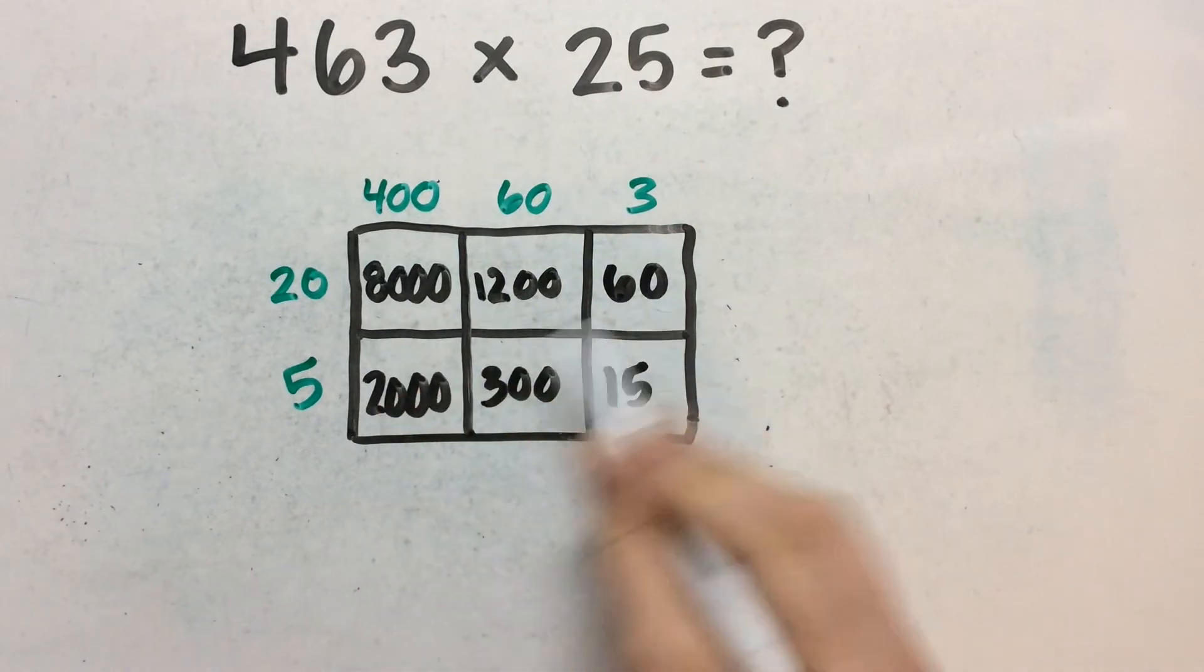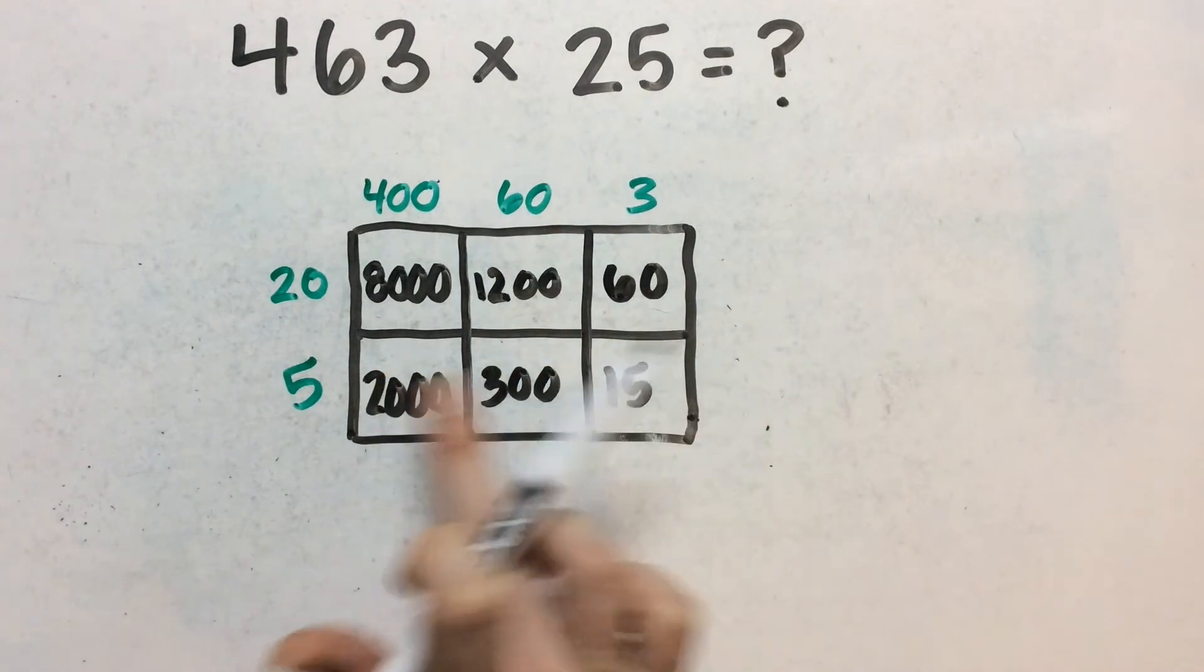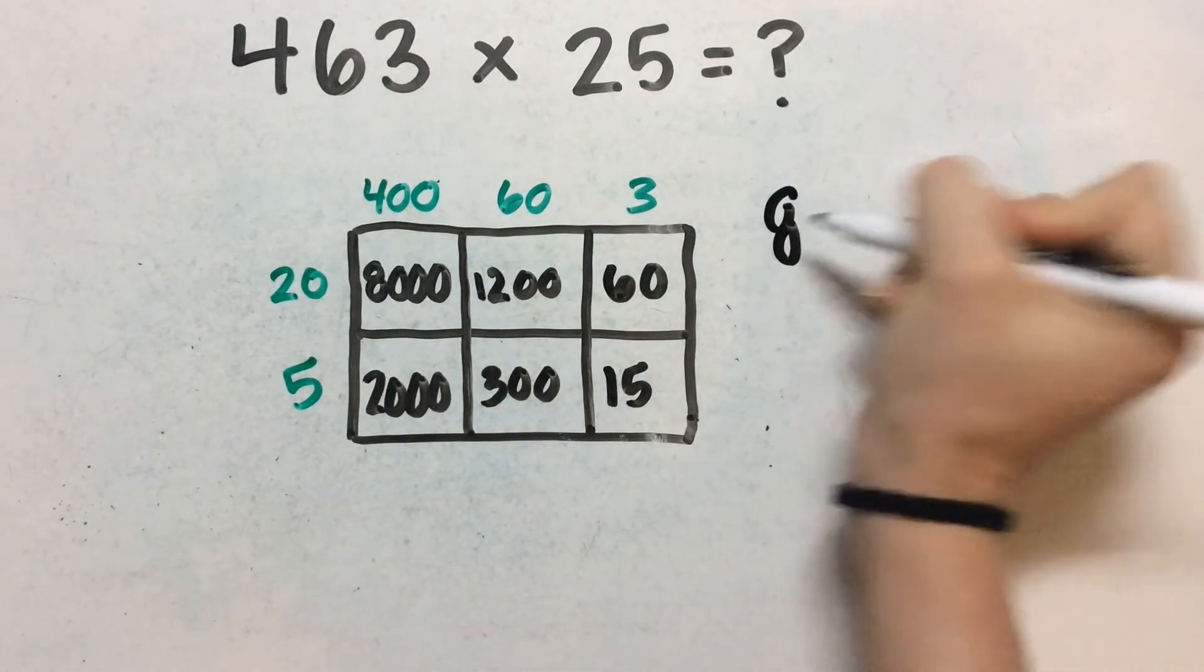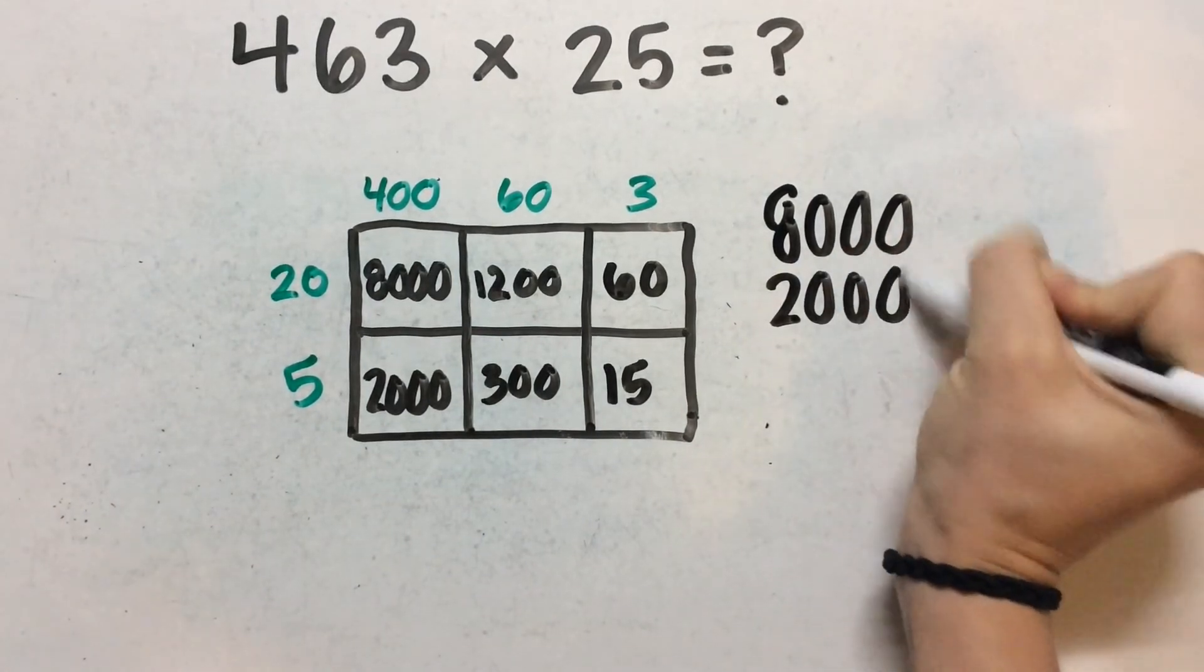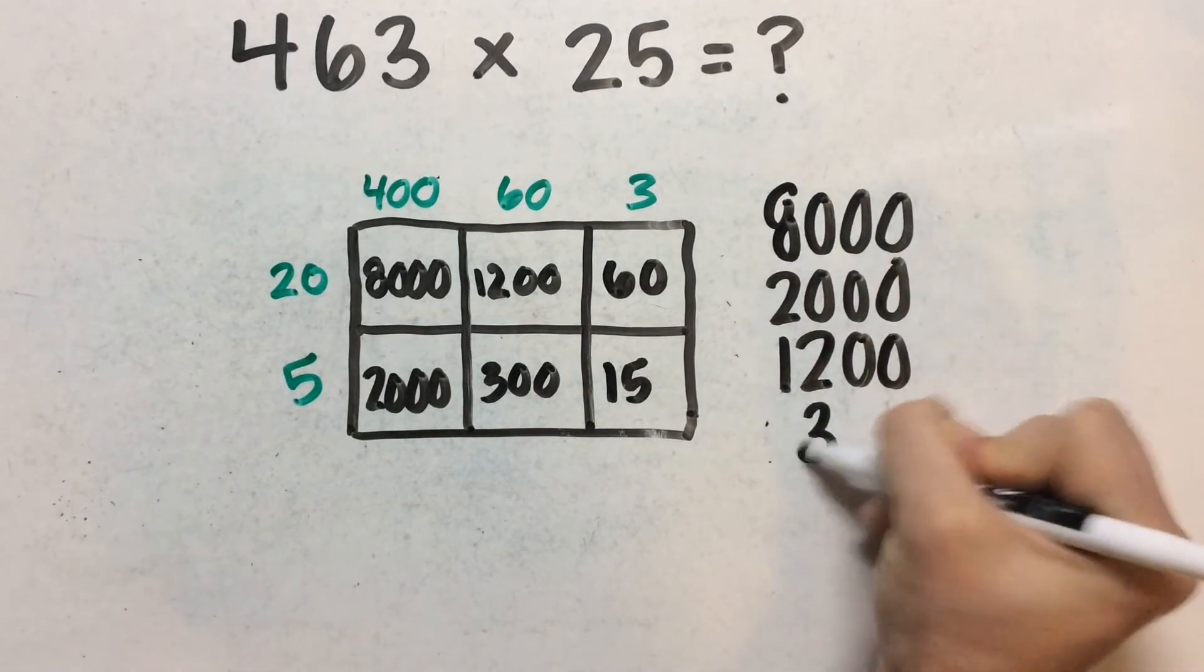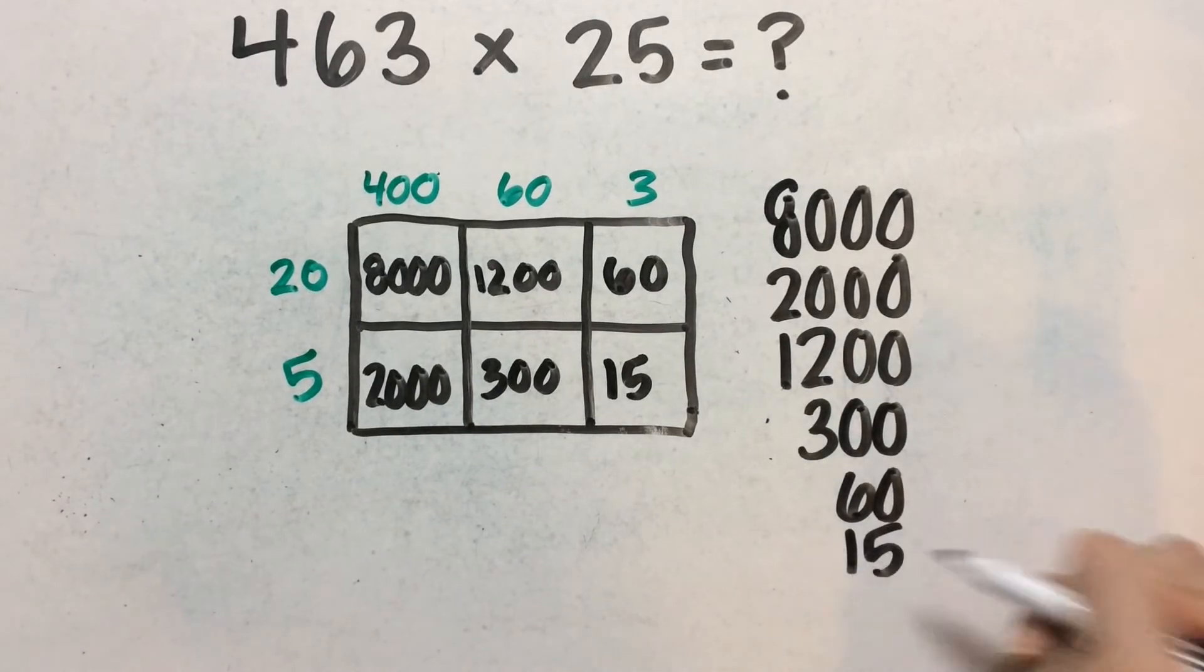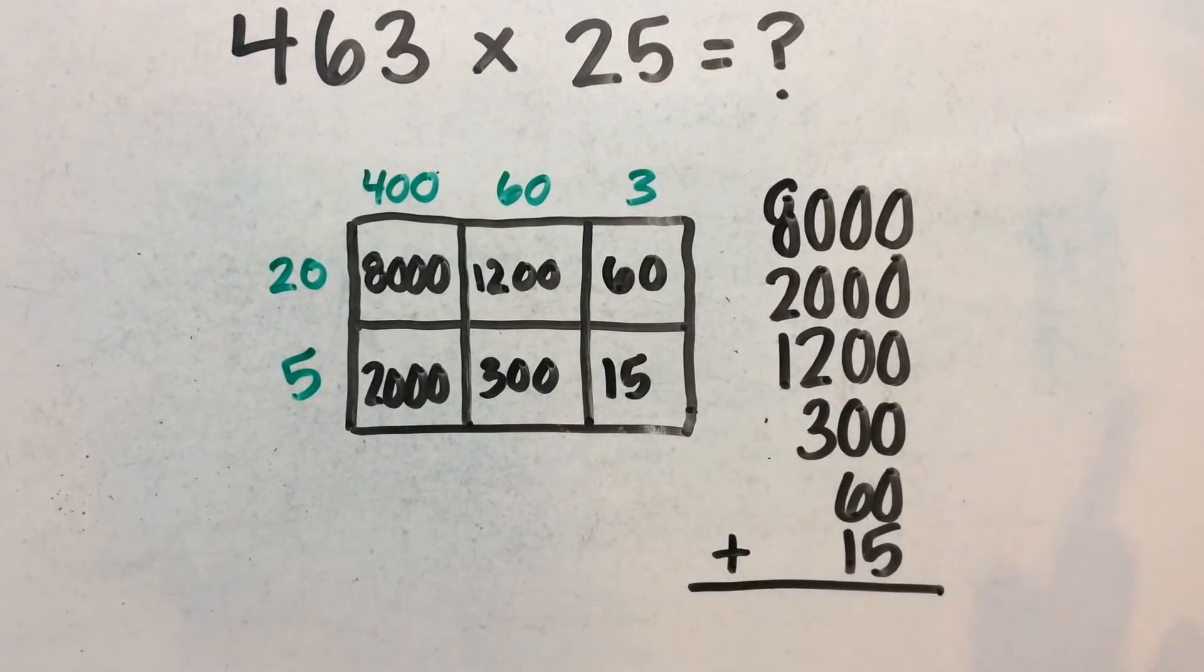So these are called partial products. And what we want to do now is add up all these partial products. So we take 8,000, 2,000, 1,200, 300, 60, and 15. And we add them all together. Kind of like we did earlier, but we're just adding them differently.